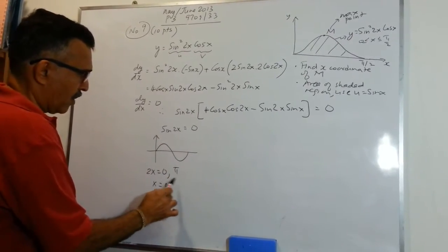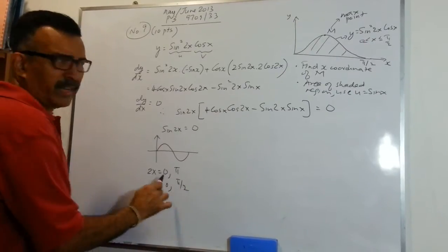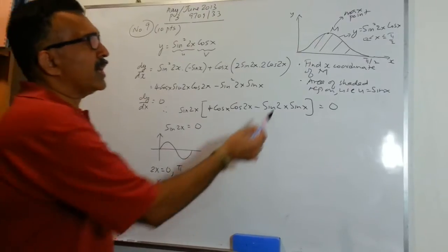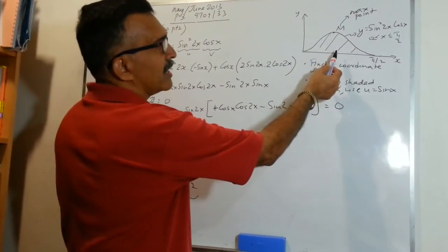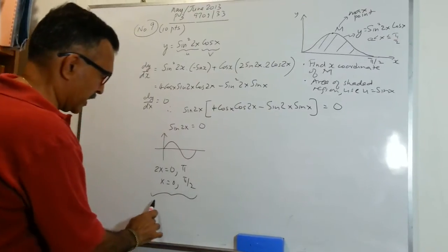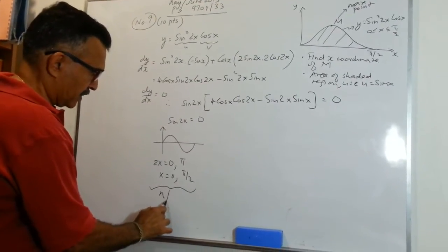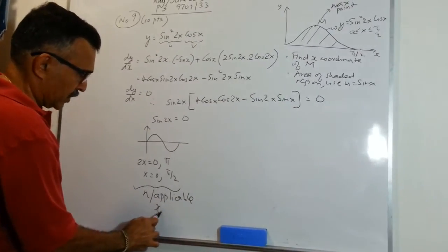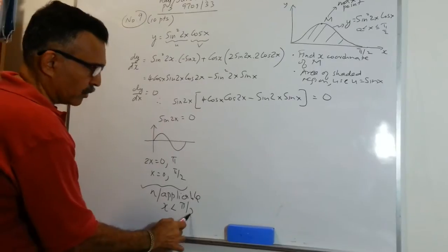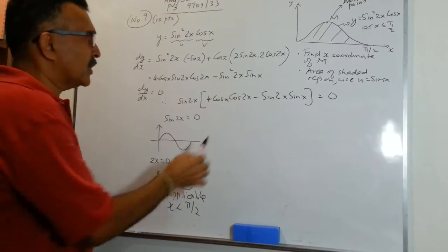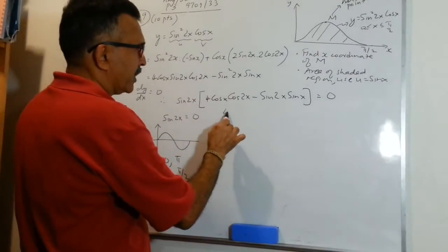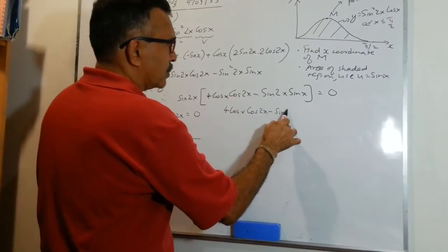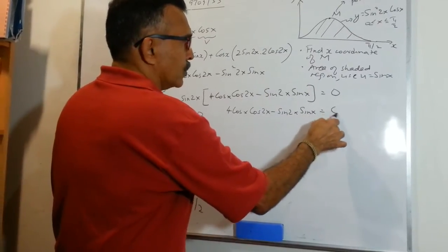This solution is not applicable because we are looking for the x coordinate of M which is less than pi over 2 - not at the endpoints. So we have to resort to the other factor: 4 cos x cos 2x minus sin 2x sin x equals 0. We expand sin 2x as 2 sin x cos x, giving 4 cos x cos 2x minus 2 sin x cos x sin x equals 0.